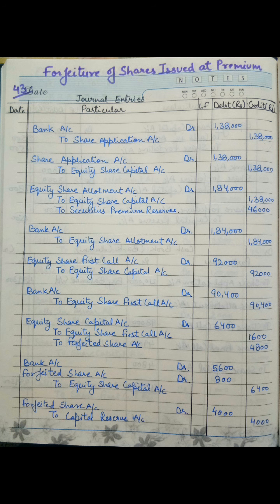The first entry would be receiving of application money by the company: Bank Account debit to Share Application Account. The amount is calculated by multiplying 46,000 into 3, giving 1,38,000 to be written in the debit and credit column. Next is the transfer entry: Share Application Account debit to Equity Share Capital Account, same amount of 1,38,000.